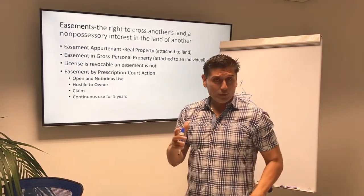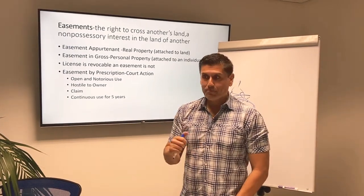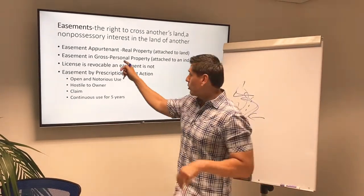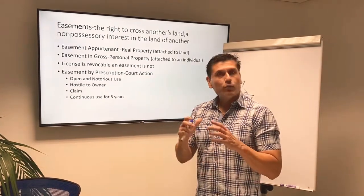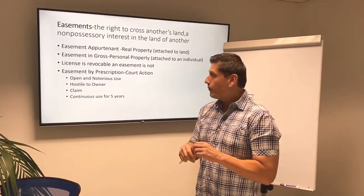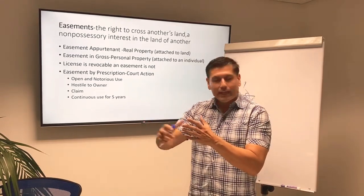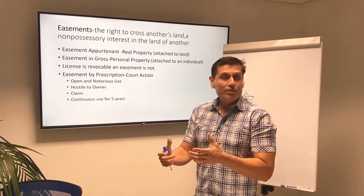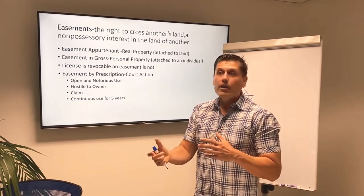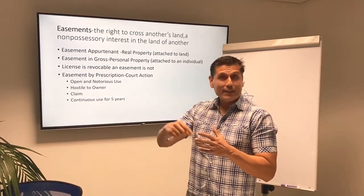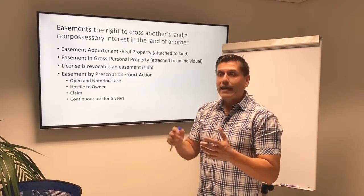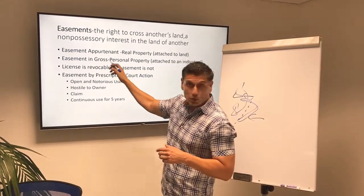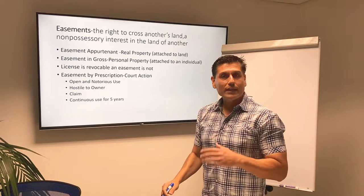Now we need to clarify three types of easements you need to know for the state exam. The first is an easement appurtenant. Whenever you see the word appurtenant, it means it goes with the house — it runs with the land for the benefit of the land. If you own a house and someone has to cross your driveway to get to their house, they probably have an easement. Your easement says you have to let them cross; their easement says they have the right to cross. Since it's about land and attached to the land, we call that an easement appurtenant — the right to cross another's property to access your own.